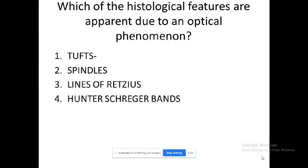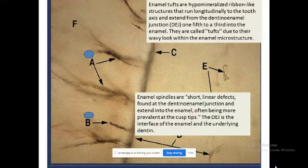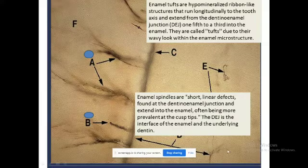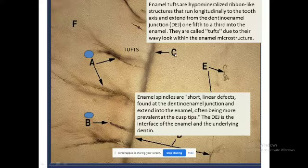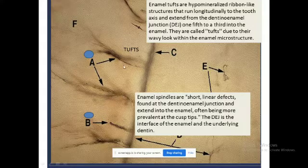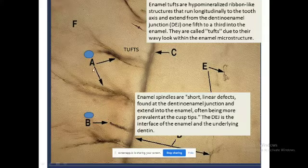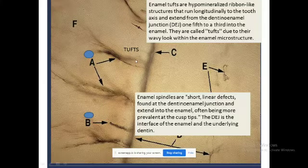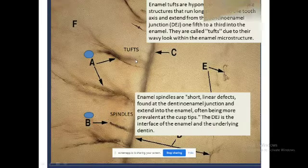What are enamel tufts? They are hypermineralized ribbon-like structures as we can appreciate in the ground section here. This is the dentino-enamel junction pointed by C, from where baby grass-like structures are appreciated running towards the occlusal incisal surfaces marked as A. These are referred to as enamel tufts.